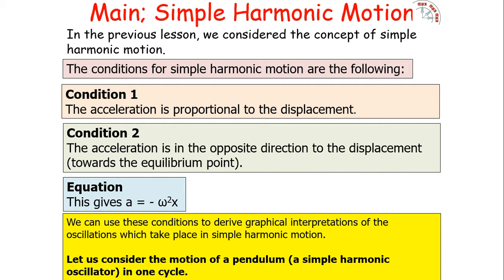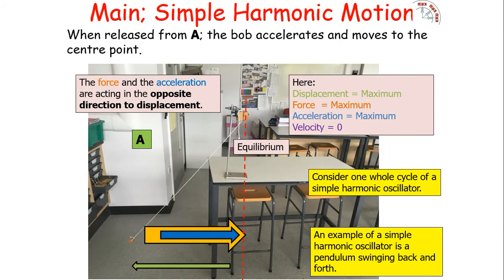We can use these conditions to derive graphical interpretations of oscillations in simple harmonic motion. Consider the motion of a pendulum — a simple harmonic oscillator — in one complete cycle. When the pendulum is released from point A, we are at maximum displacement, so it will accelerate towards the centre equilibrium point. At this point we have maximum displacement from equilibrium, we're at the amplitude, so the force and acceleration are both at a maximum.